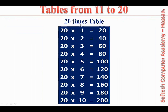20 times table. 20 ones are 20. 20 twos are 40. 20 threes are 60. 20 fours are 80. 20 fives are 100. 20 sixes are 120. 20 sevens are 140. 20 eights are 160. 20 nines are 180. 20 tens are 200. Thank you.